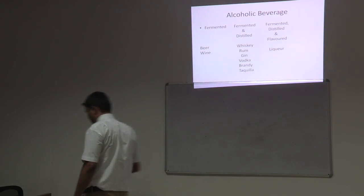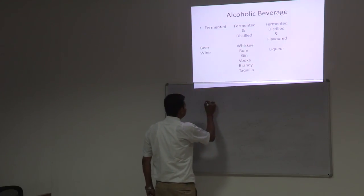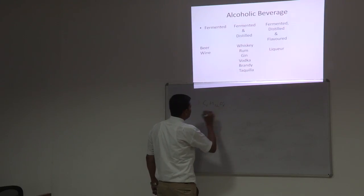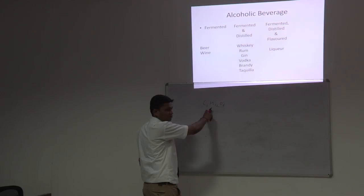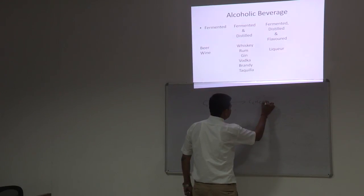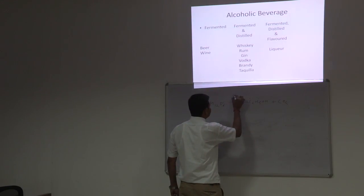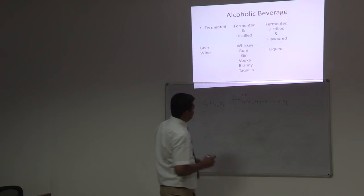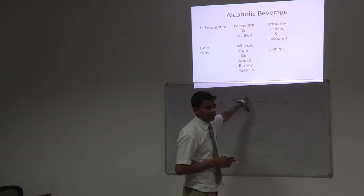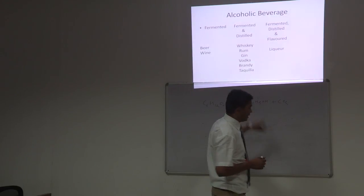Basically, what is fermentation? There is a chemical formula of fermentation: C6H12O6, which is the formula of sugar — fructose. When we add water and sugar and provide a temperature of 60 to 65 degrees, along with the addition of yeast, the result is alcohol. And this alcohol is ethyl alcohol.